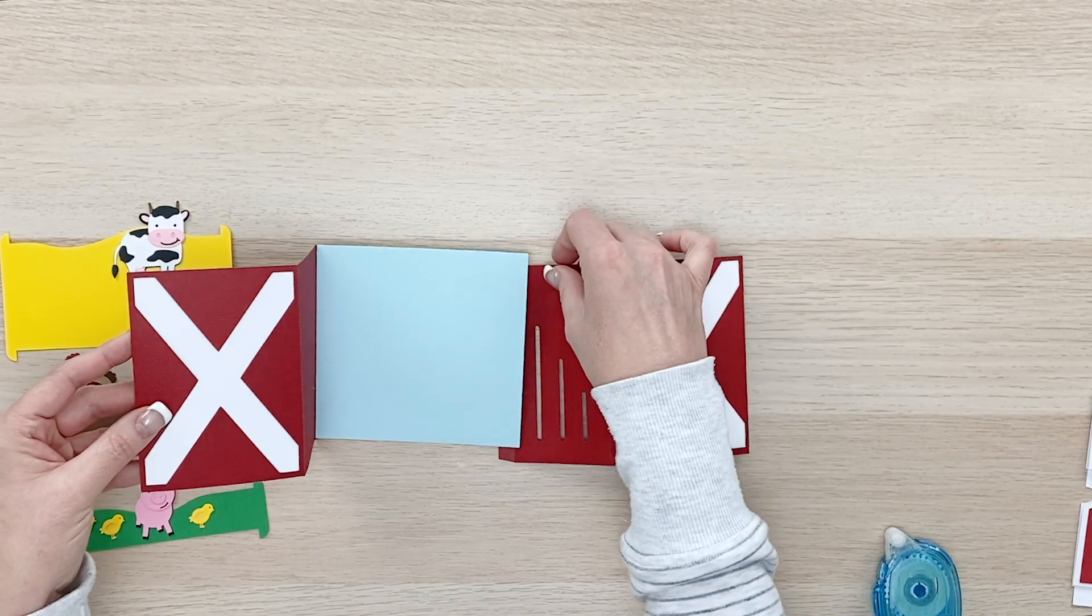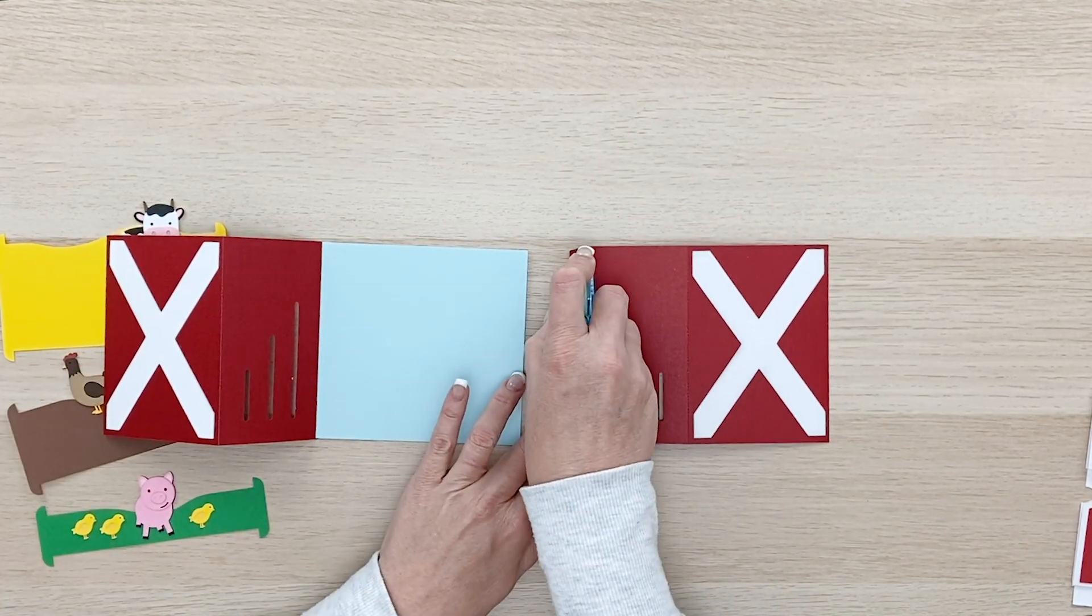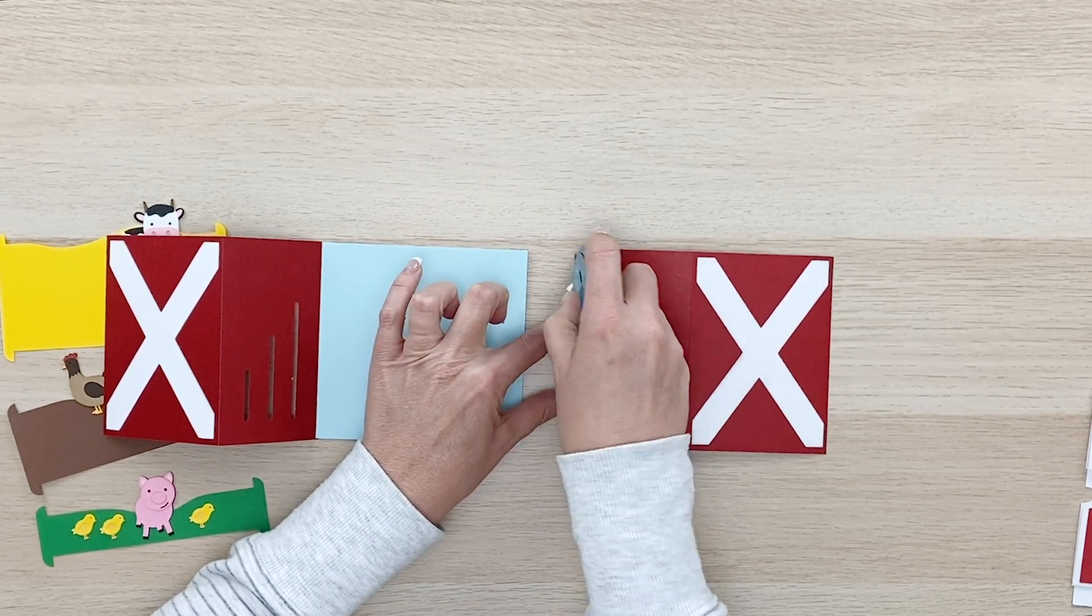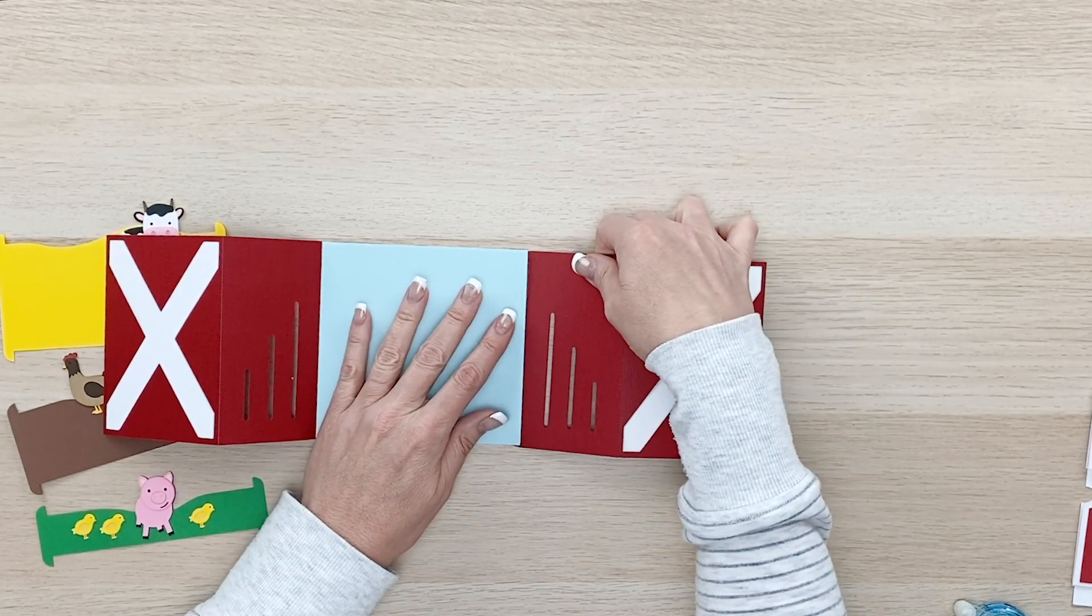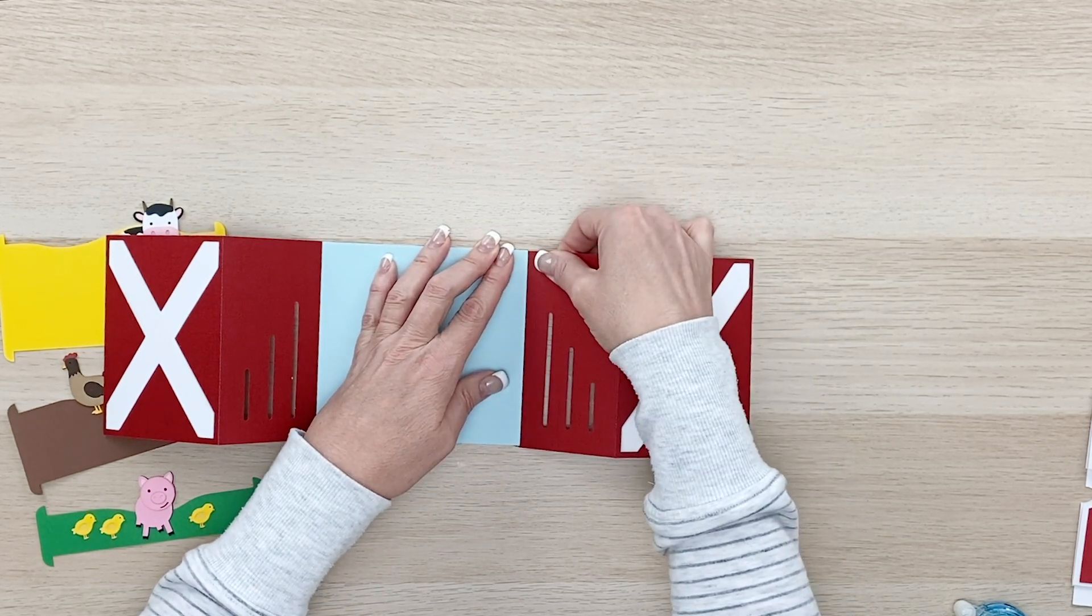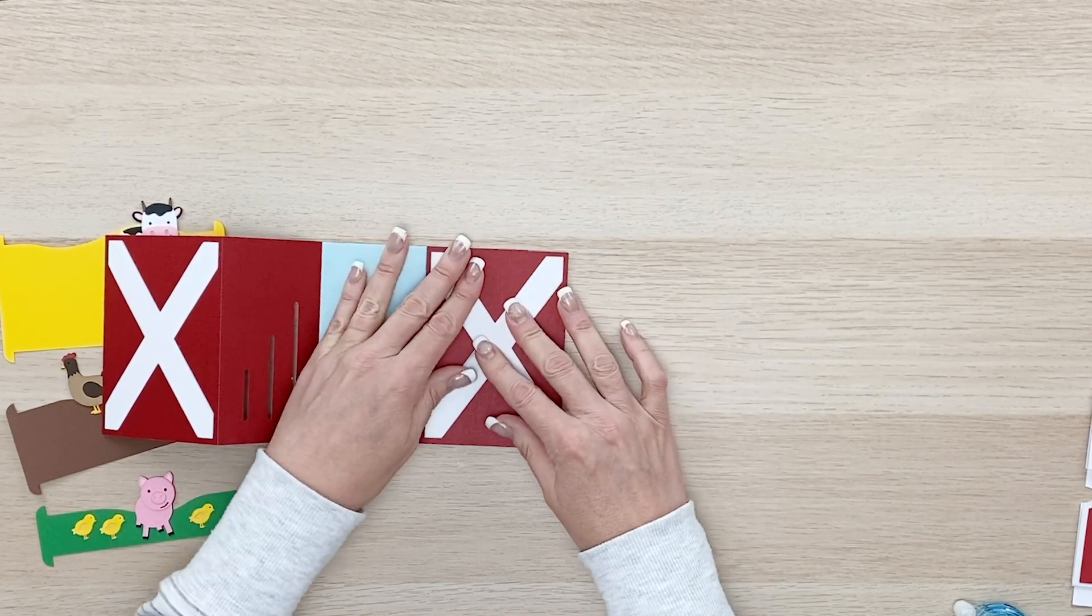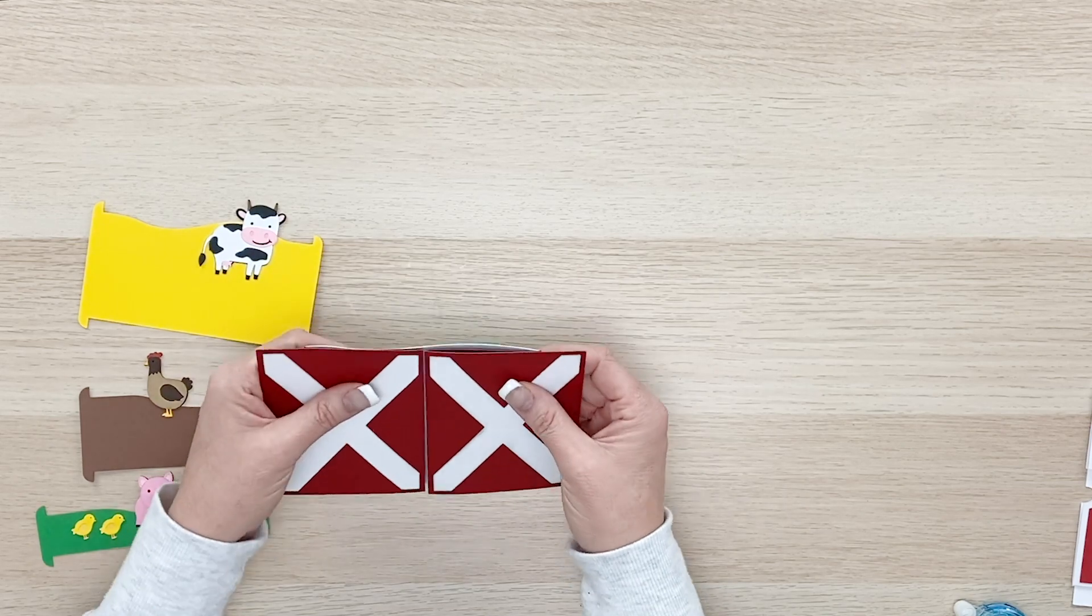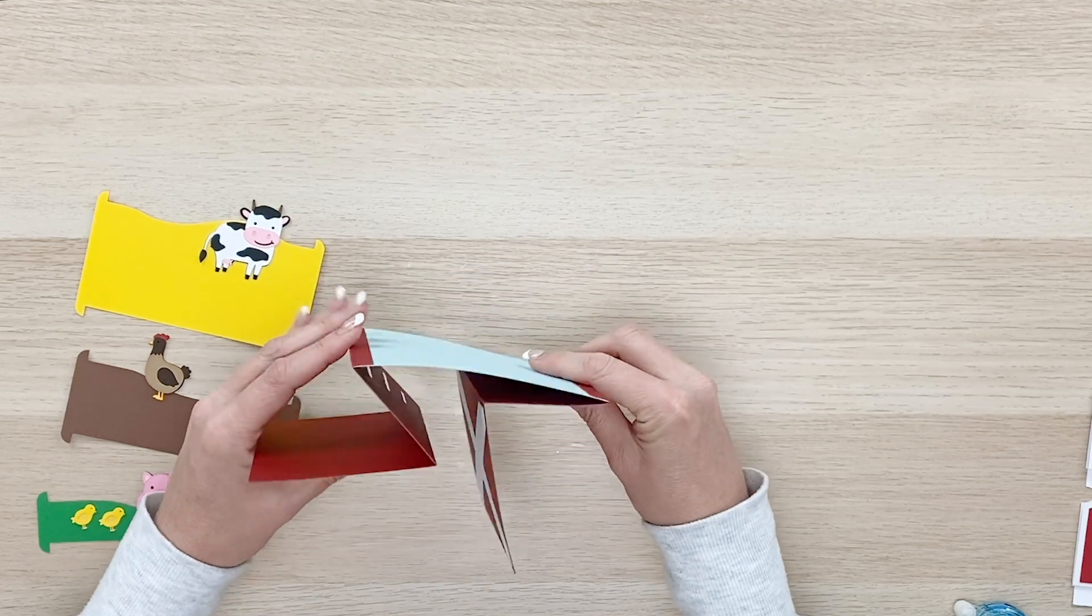And then we're going to do the exact same thing on this side. I want to get adhesive right up to the edge there. So I don't want this coming loose. Just make sure you line that up where it's nice and centered. And that should come together right here in the middle. And just glue those down nice and tight.